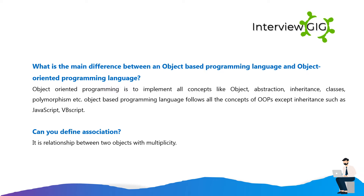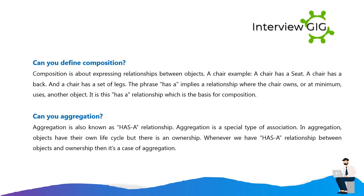Can you define association? It is a relationship between two objects with a multiplicity. Can you define composition? Composition is about expressing relationships between objects. A chair example: a chair has a seat, a chair has a back, and a chair has a set of legs. The phrase 'has a' implies a relationship where the chair owns, or at minimum uses, another object. It is this 'has a' relationship which is the basis for composition.